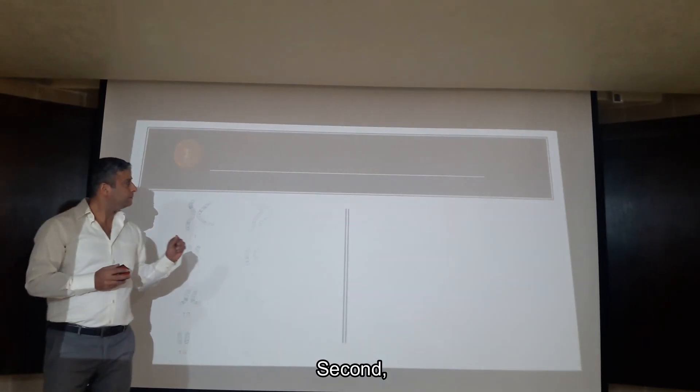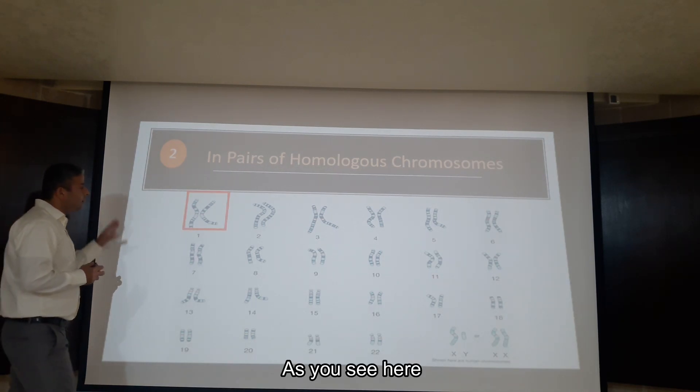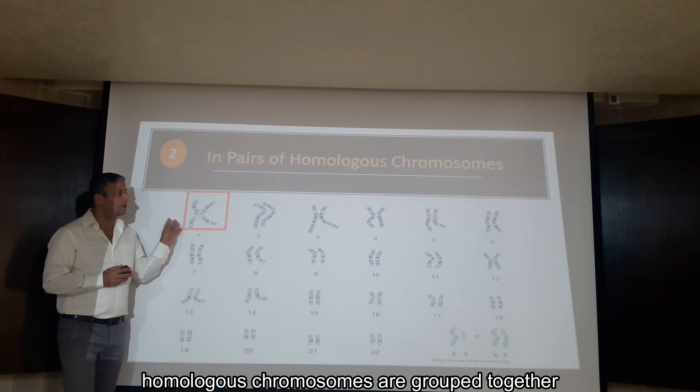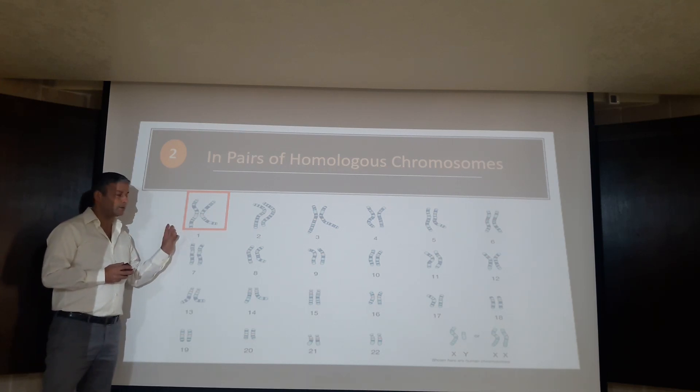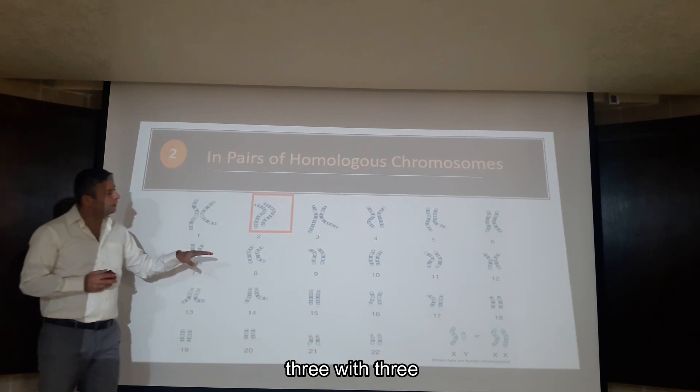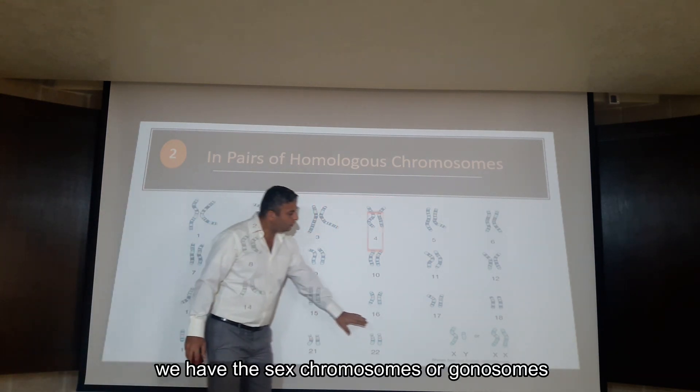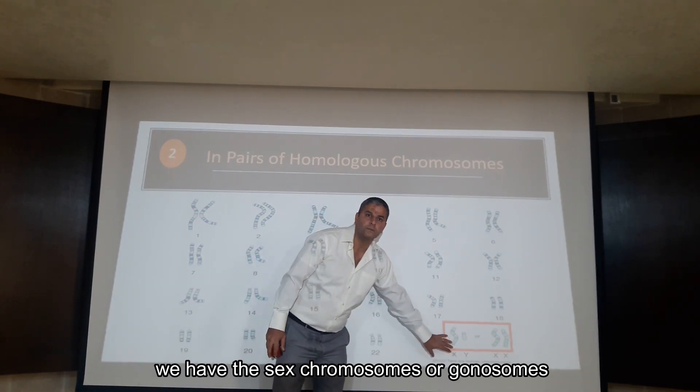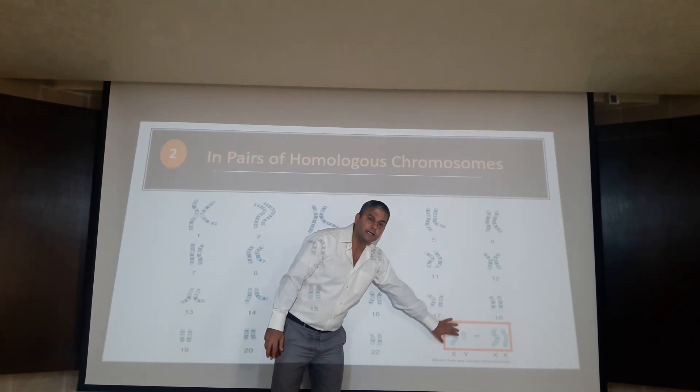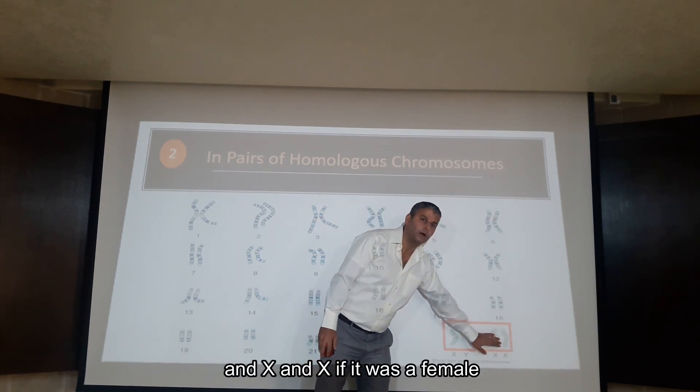Second, in pairs of homologous chromosomes. As you see here, homologous chromosomes are grouped together. We have chromosome 1 with chromosome 1, 2 with 2, 3 with 3, and so on. And aside, we have the sex chromosomes, X and Y if it was a male, and X and X if it was a female.